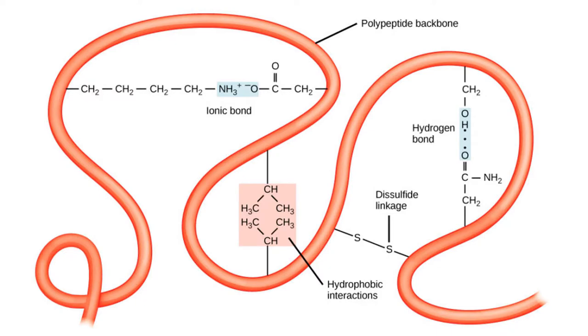Let us see the bonds responsible for protein structure. Protein structure is stabilized by two types of bonds: covalent bonds and non-covalent bonds. The covalent bonds are the peptide and disulfide bonds, which are strong bonds in protein structure.